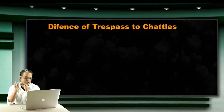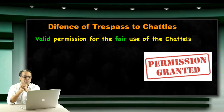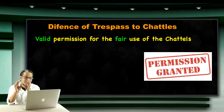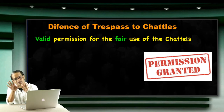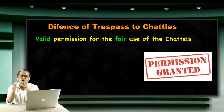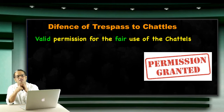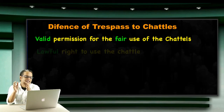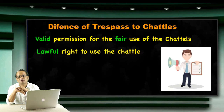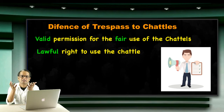Now the defenses. What are the defenses of trespass to chattel? The first is a valid permission for the fair use of the chattel. You need to focus on two terms: valid permission — permission, but it has to be valid — and fair use. It is not like if someone has given you permission to use his property, you can damage it in the course of using it. So it has to be fair use. The second defense is a lawful right to use that chattel. If you have the lawful right to use that chattel, then there is no question of any claim.